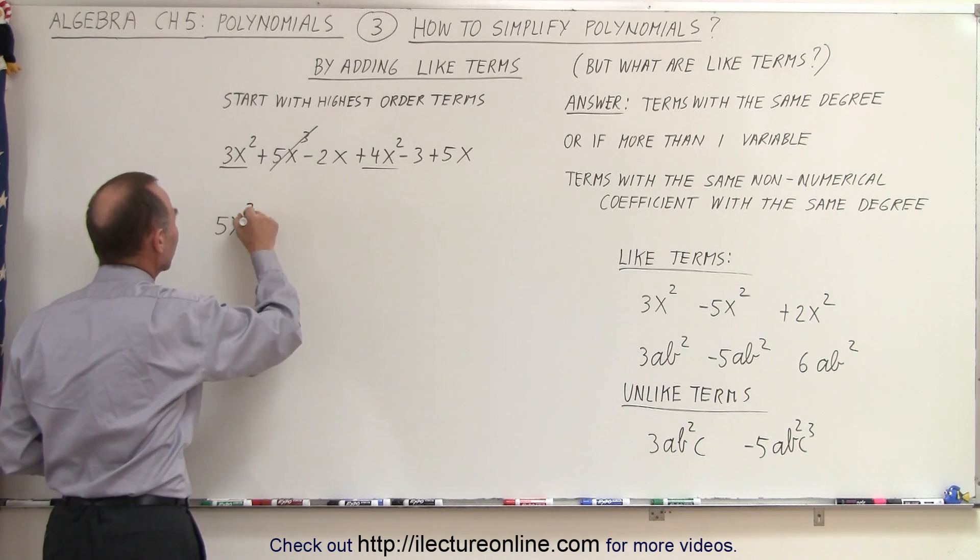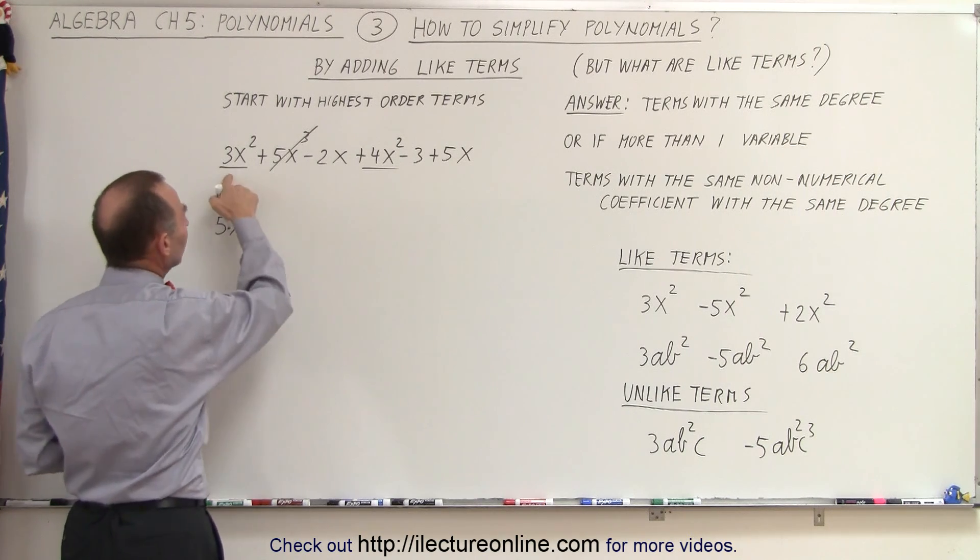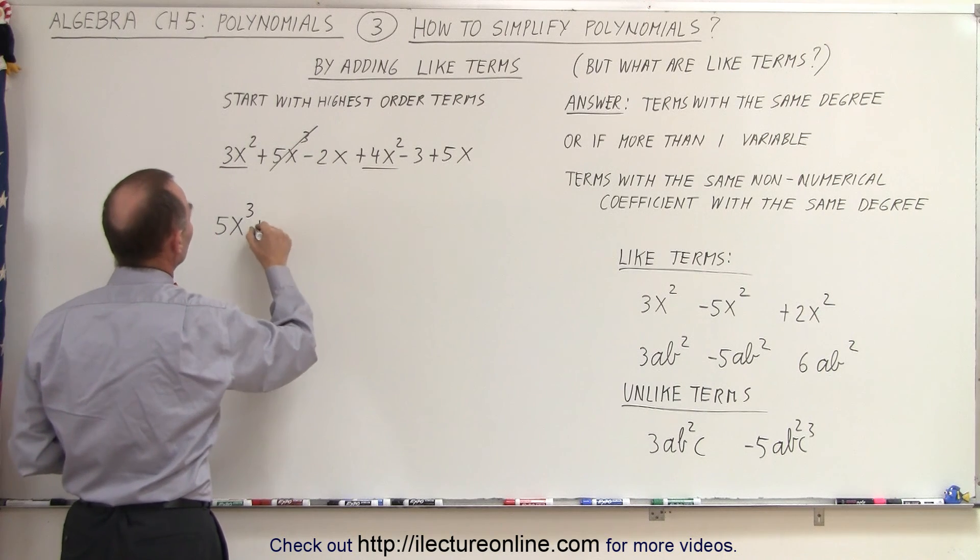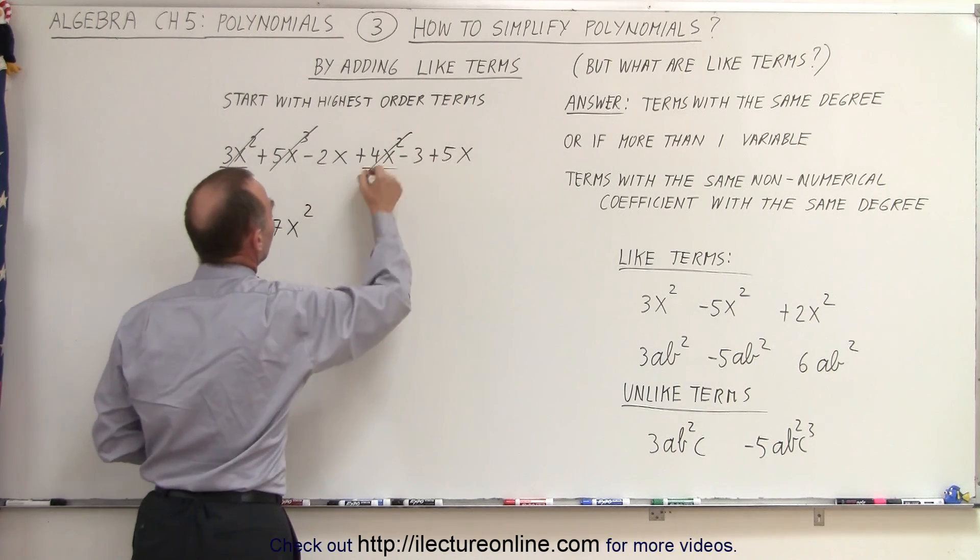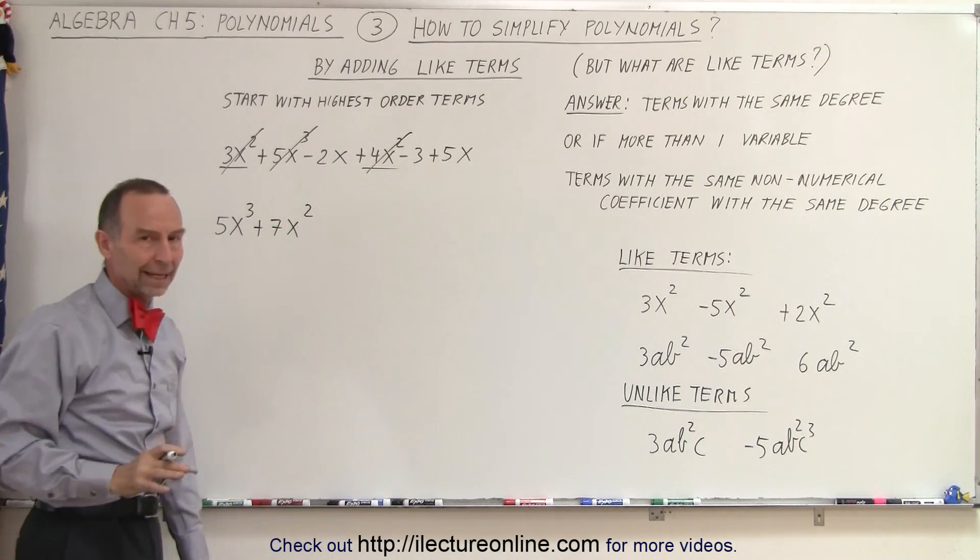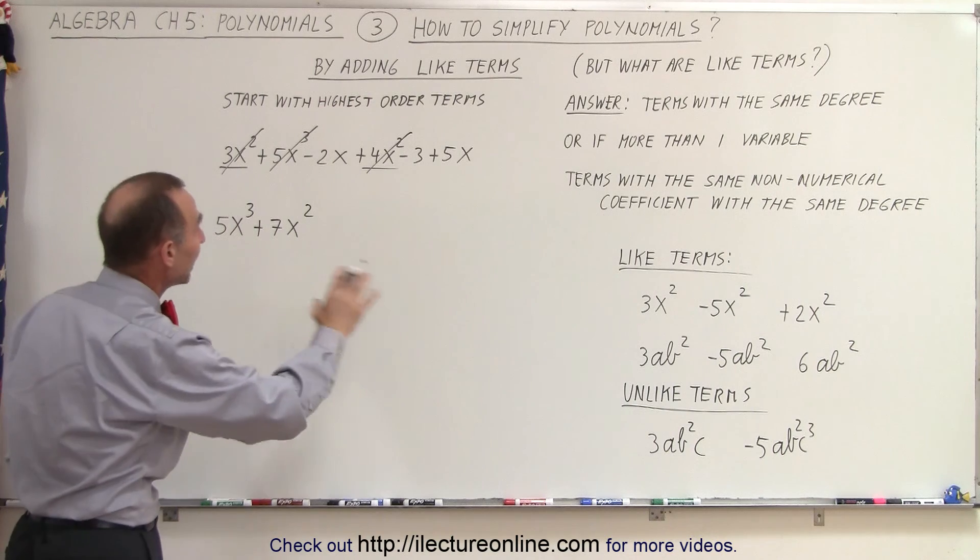I'm going to rewrite this 3 right there. And so 3x² plus 4x² is equal to 7x². So now, if I've combined the two alike terms, I can now put a line through that so I don't use them again and makes it easier to find the remainder terms.